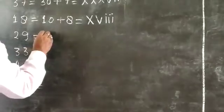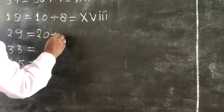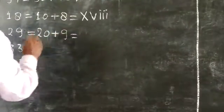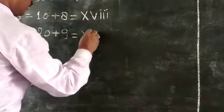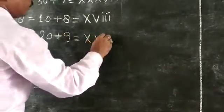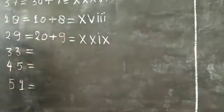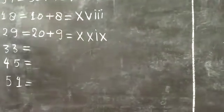29: 20 plus 9. Roman numeral of 20 is XX and 9 is IX, so 29 equals XXIX.